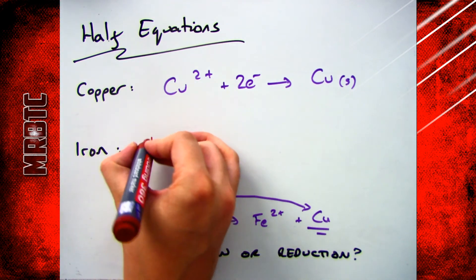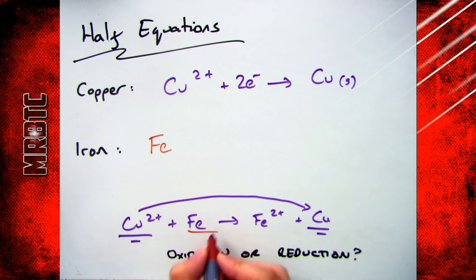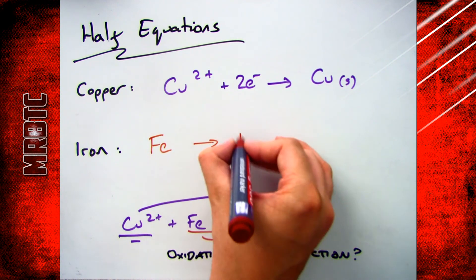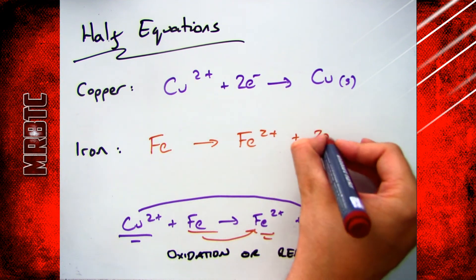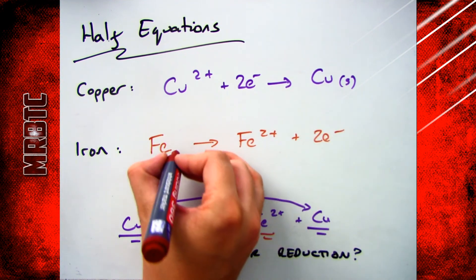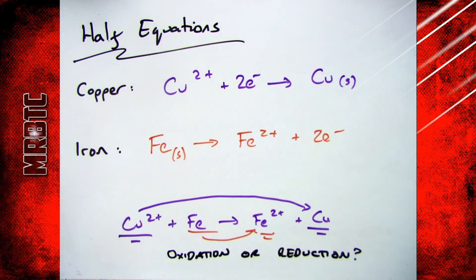Iron: I'm starting off with Fe and I'm going to Fe2+. How am I doing that? How can I take a metal and turn it into an ion? I take two electrons away, so I put + 2e- on the right hand side.